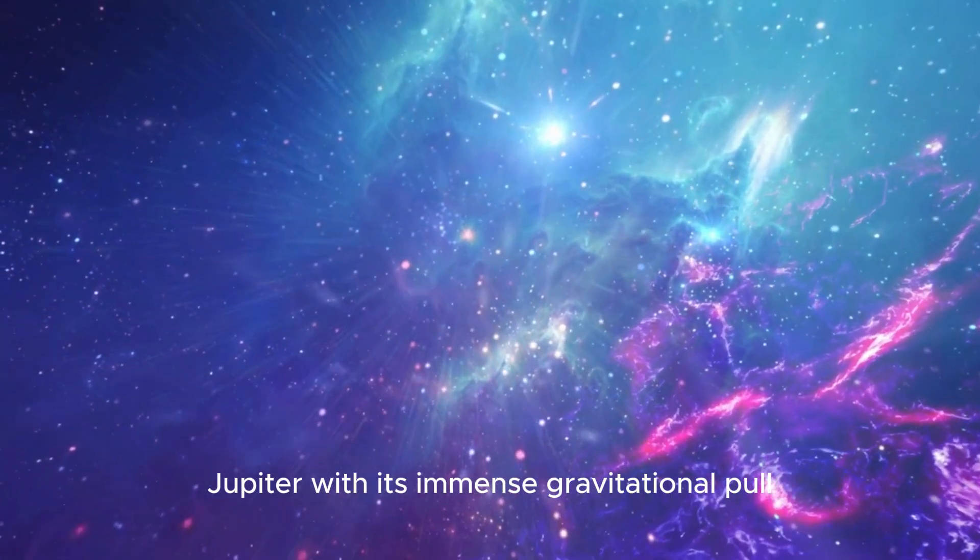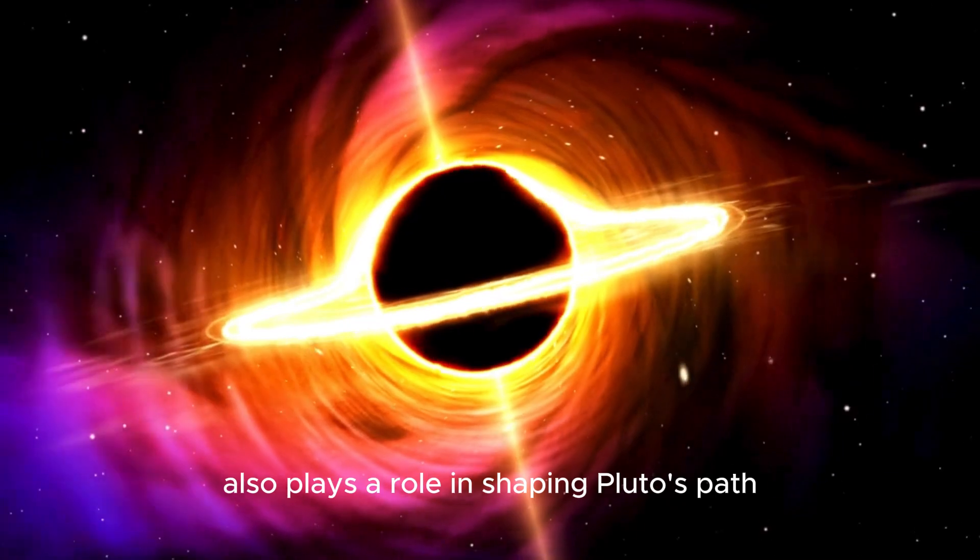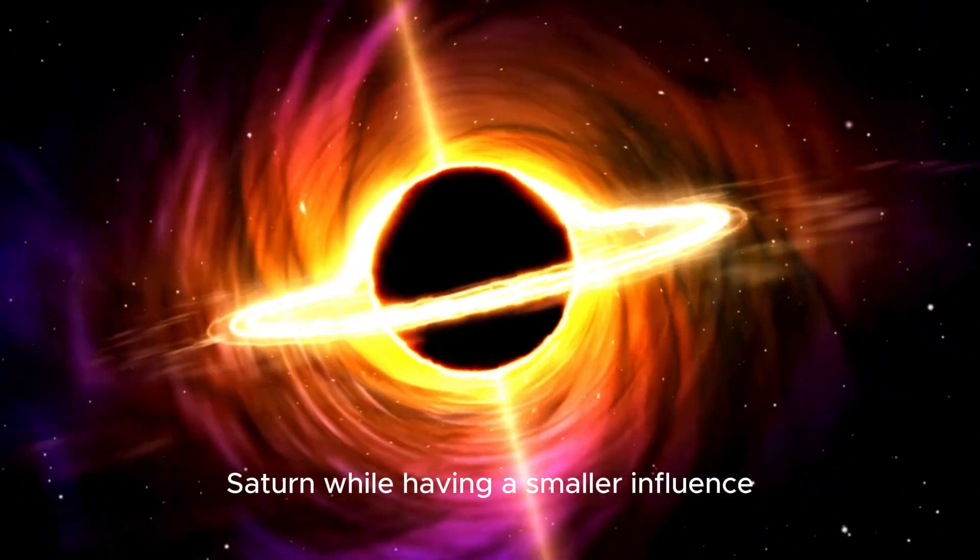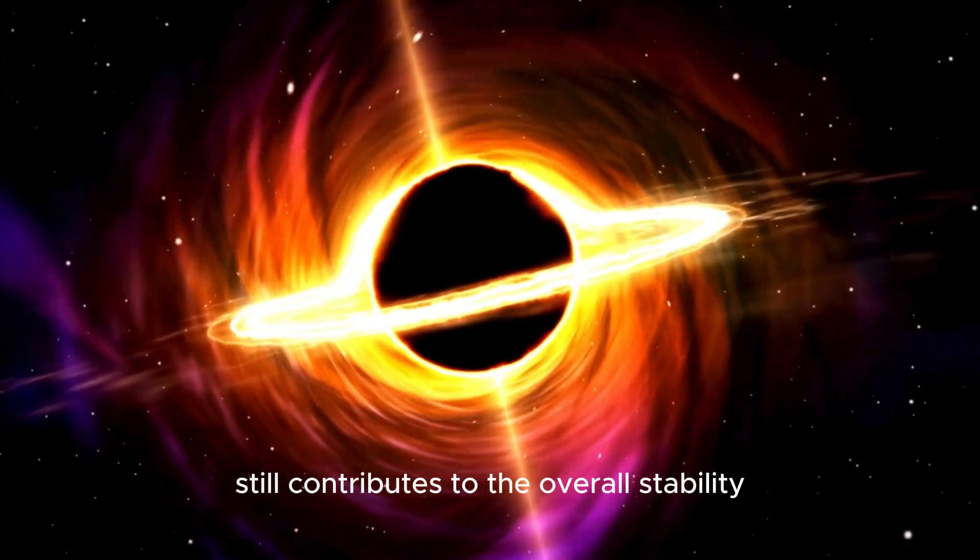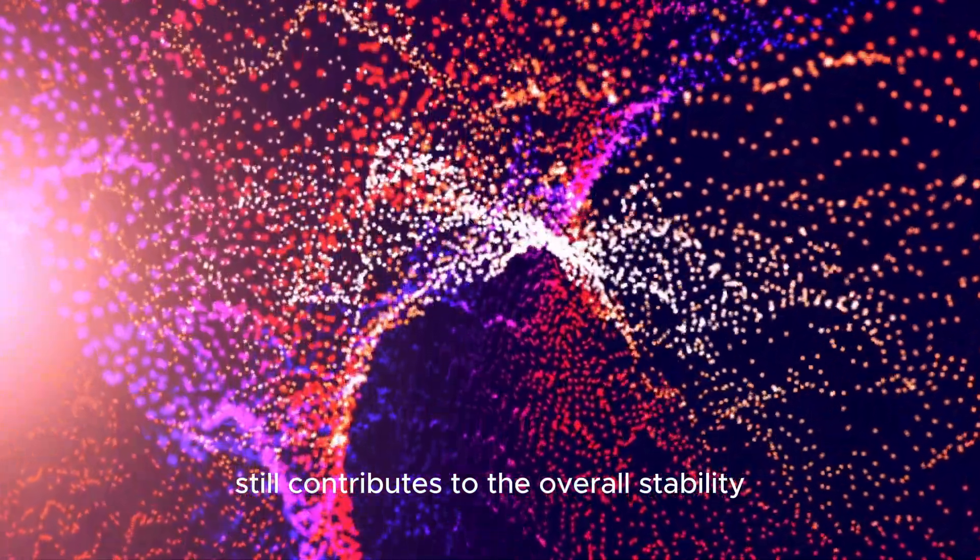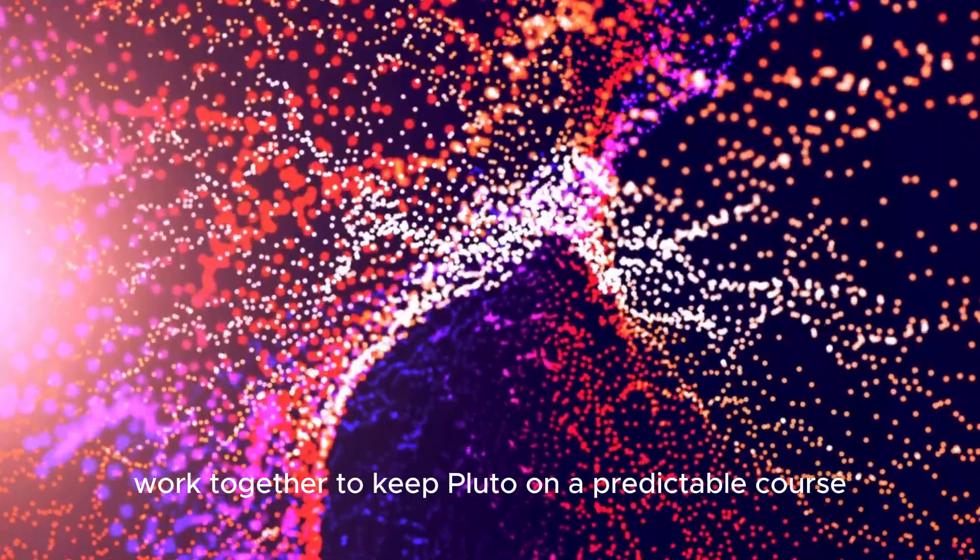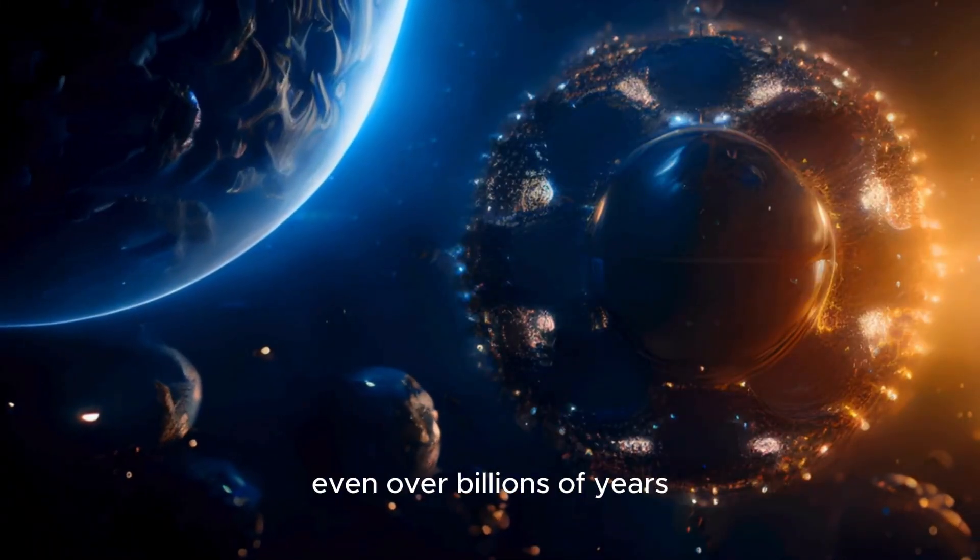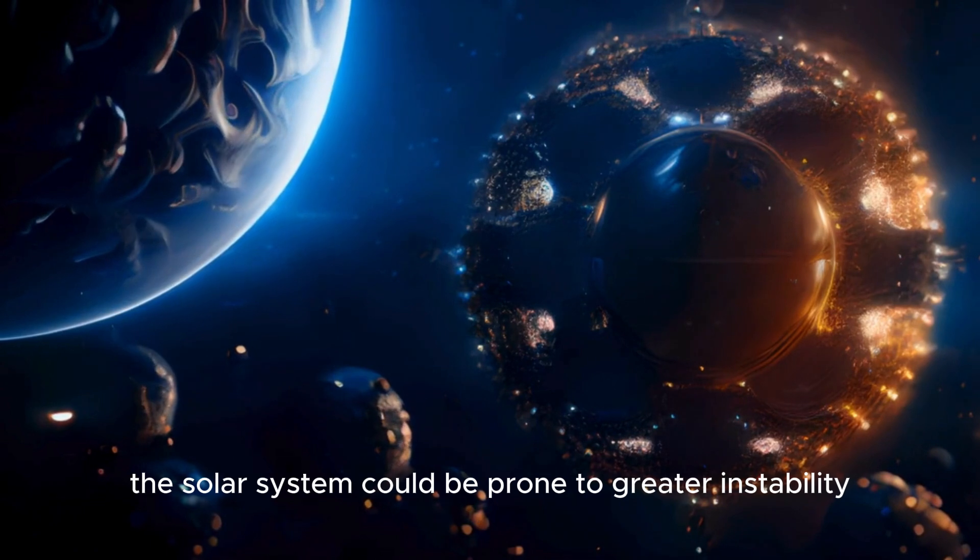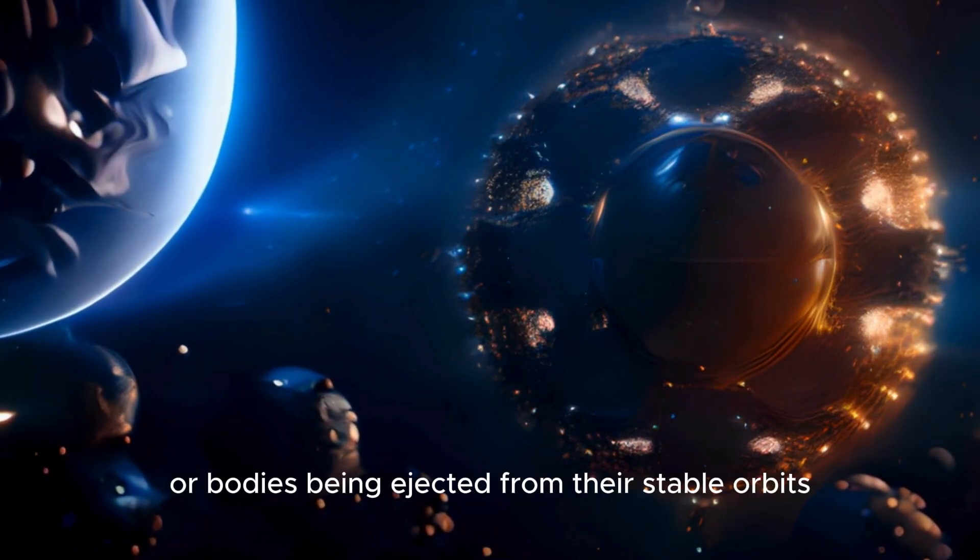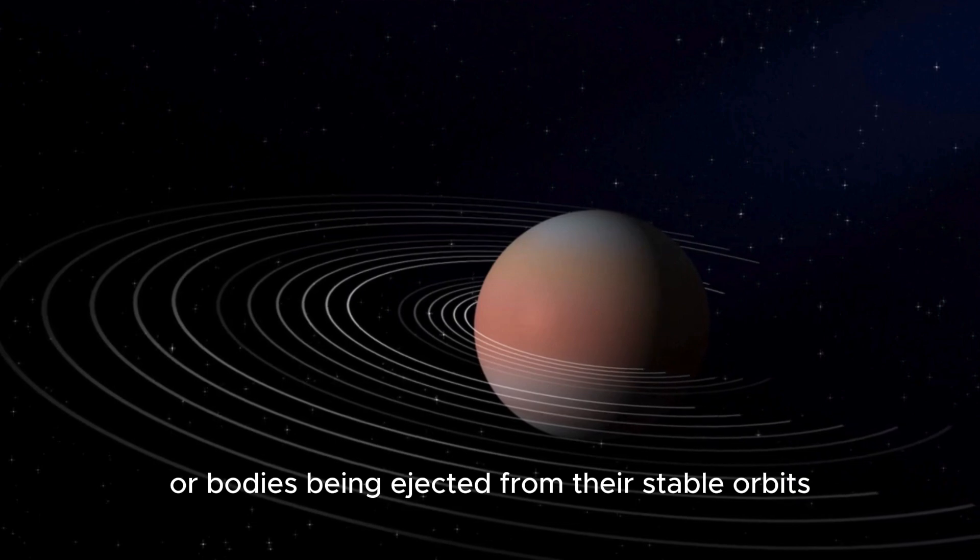Jupiter, with its immense gravitational pull, also plays a role in shaping Pluto's path. Saturn, while having a smaller influence, still contributes to the overall stability of Pluto's orbit. These factors work together to keep Pluto on a predictable course, even over billions of years. Without such forces, the solar system could be prone to greater instability, with more collisions or bodies being ejected from their stable orbits.